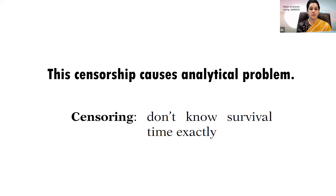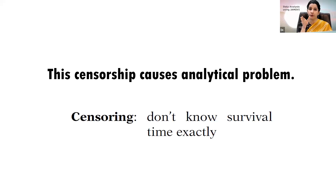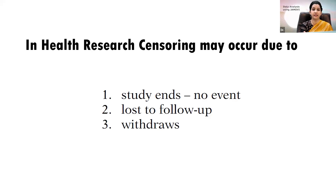This censorship always causes an analytical problem because we don't know the exact survival time. To deal with censorship, the Kaplan-Meier survival curve and the Cox proportional hazard method were invented. In logistic regression, we only see whether someone died or was alive at the end of a period — we don't take time into consideration, which is the key difference with survival analysis.